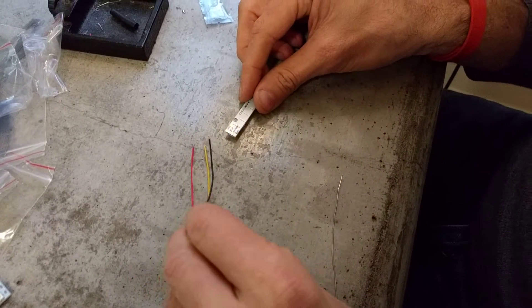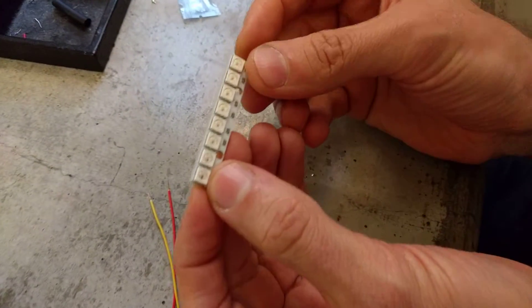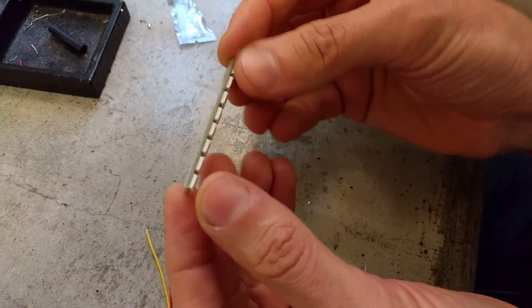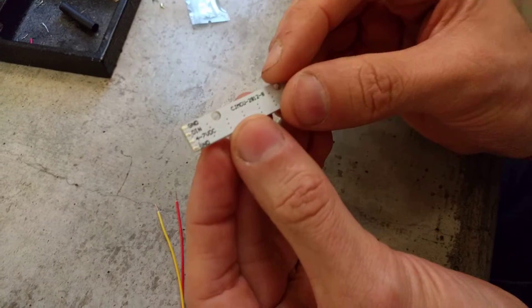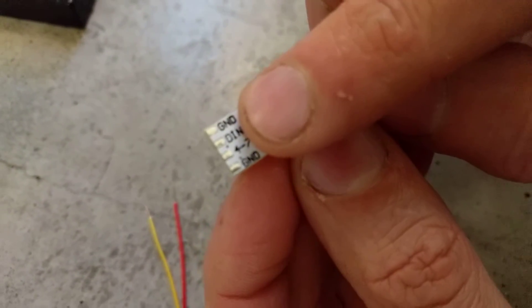Okay, so this is how I do my NeoPixel strip. You can see here we've got just a little 8 pixel NeoPixel strip and on the back of it you can see we've got some pads down here which are quite small which need to have the wires soldered onto them.